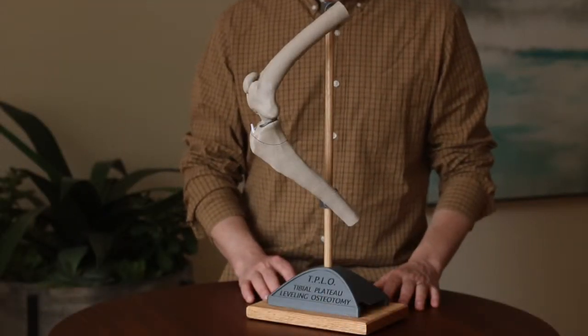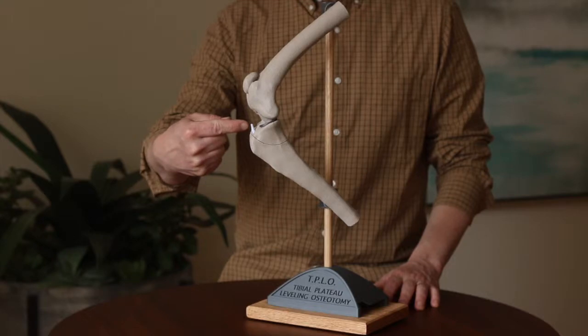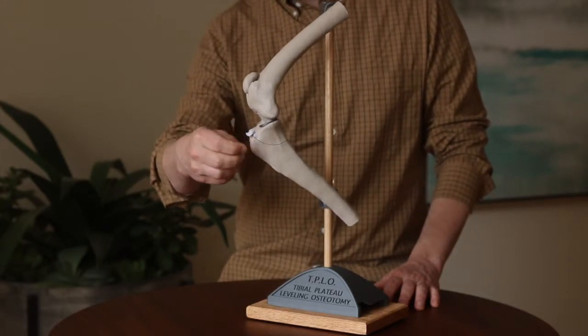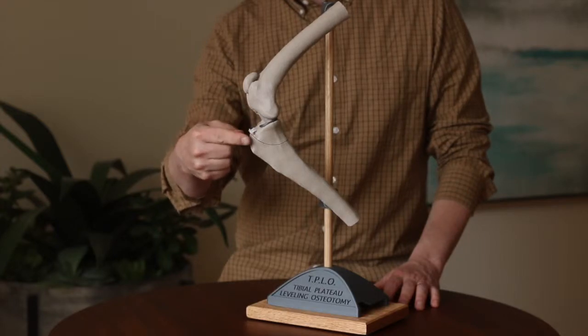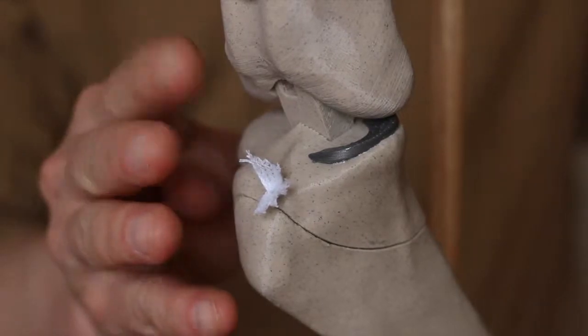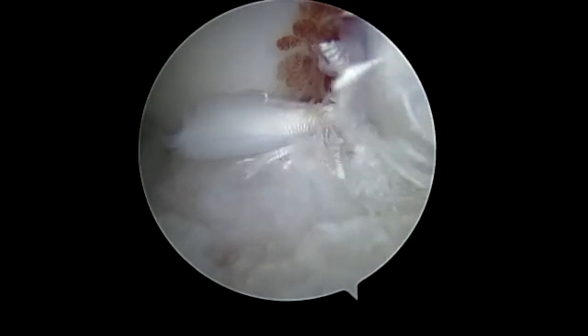The way we treat this injury in dogs is via surgery, and the first part of surgery is to look in the knee. That's the first time that we see definitively that there is a tear of the cranial cruciate ligament, and it actually looks remarkably like this with the fibers kind of floating out towards you. This is an image from inside a dog's knee, and you can see the torn fibers of the cranial cruciate ligament.